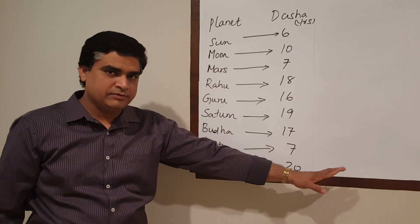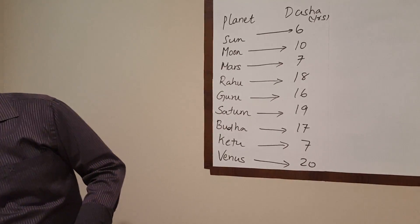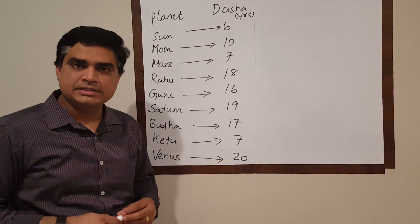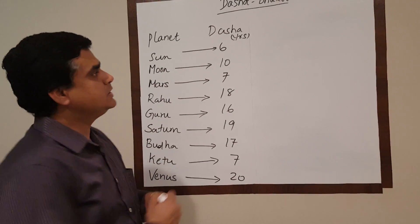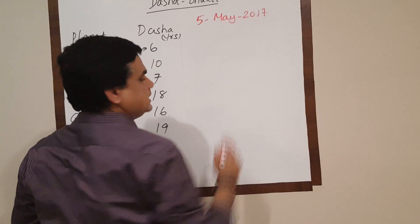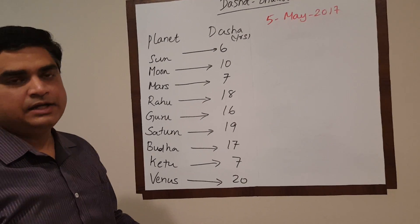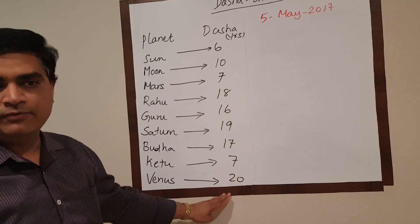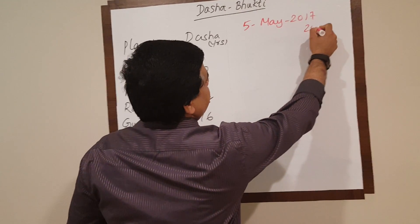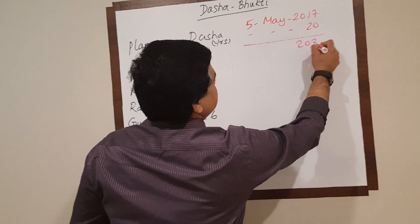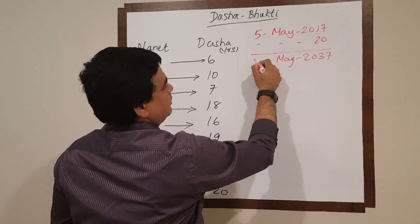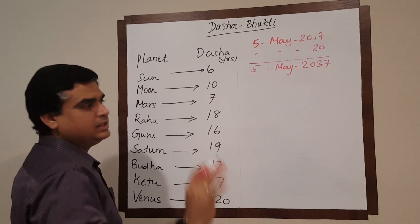Now moving to the right side of the whiteboard, I'll explain how to calculate the sub period or Bhukti. Assuming somebody's Shukra Dasha started today, May 5th, 2017 — the first thing we need to understand is till what day the Shukra Dasha will be in operation. Since Shukra Dasha lasts 20 years, we simply add 20 years, so this person will experience Shukra Dasha until May 5th, 2037. That's the first estimation.